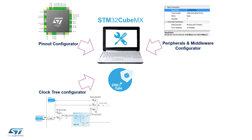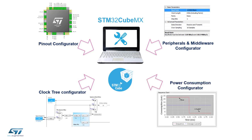We can configure not only all the GPIOs, but also all the peripherals — like USART, ADC, DAC, timers, etc. — all in a graphical way. We can also simulate the current and power consumption based on the already configured peripheral set, the particular clock frequency, and the clock source. That covers all the basic functionalities of CubeMX.